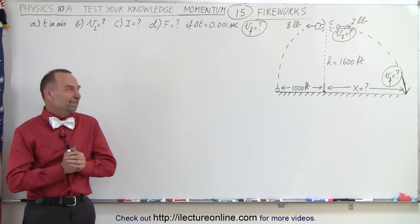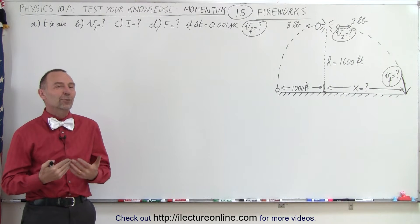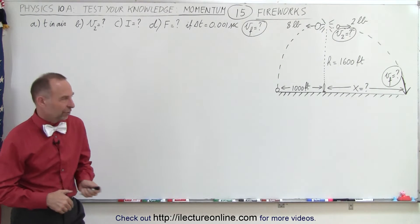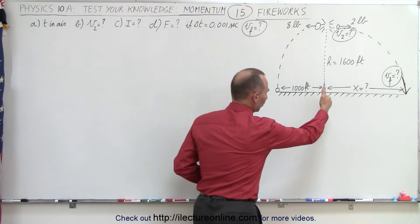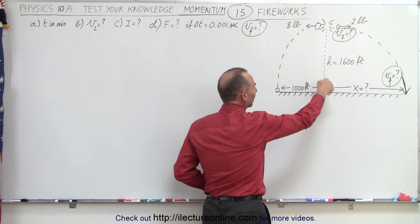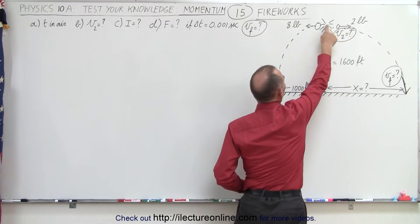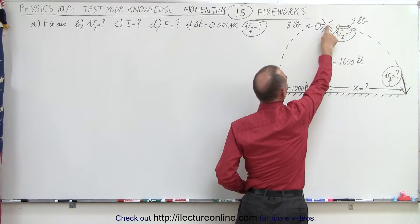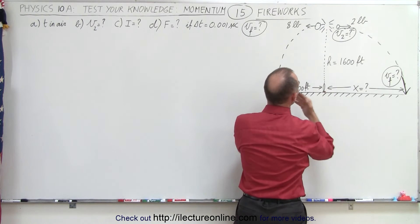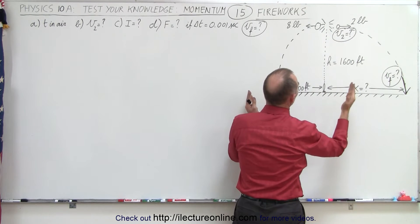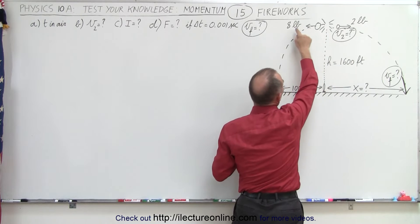Welcome to ElectronLine. In this example, we're dealing with fireworks. Let's assume that we shoot some fireworks straight up. It reaches a height of 600 feet. When it reaches a maximum height, it explodes. Two pieces are shot, one to the left, one to the right.